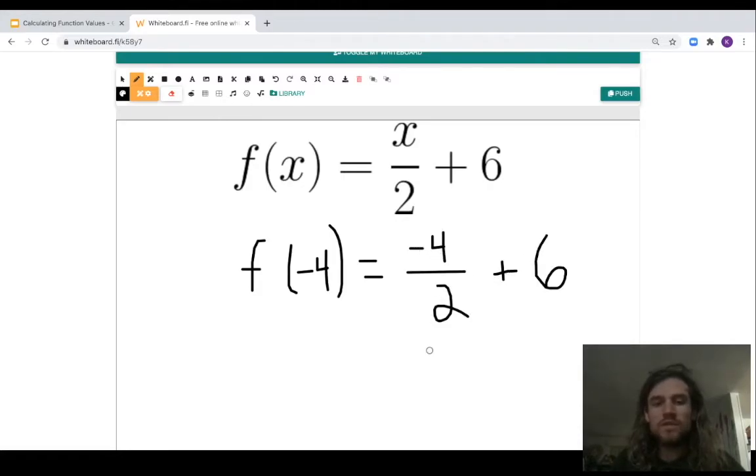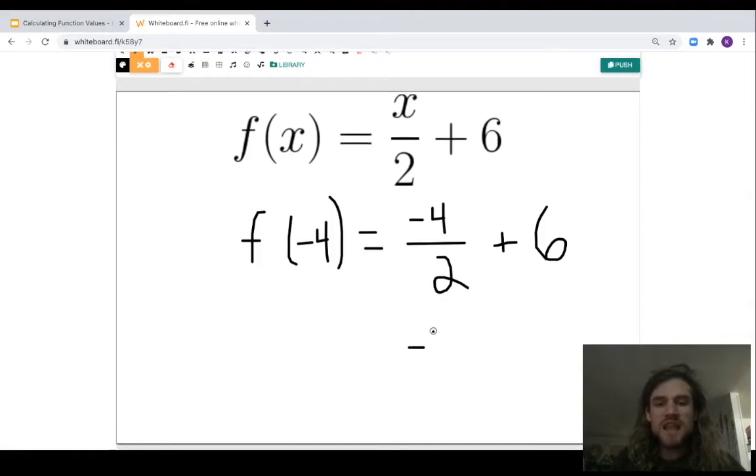Negative two plus six, so our overall value is four. So f of negative four maps to positive four.